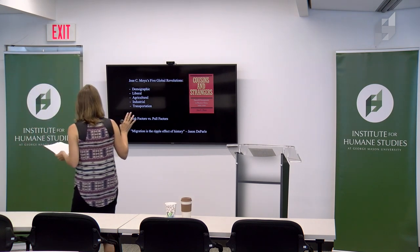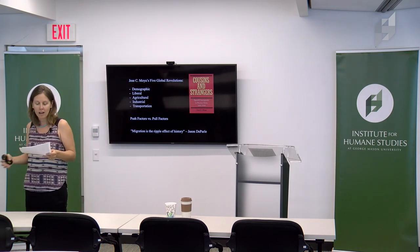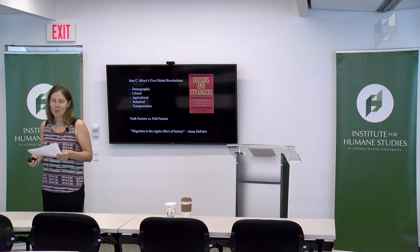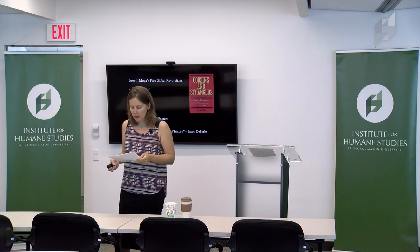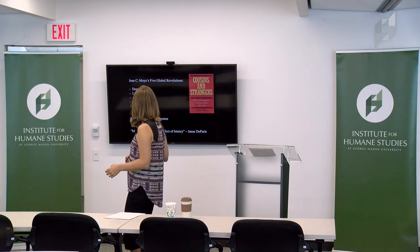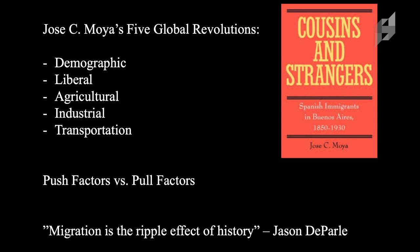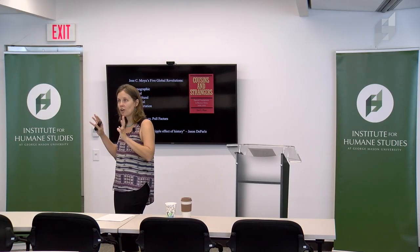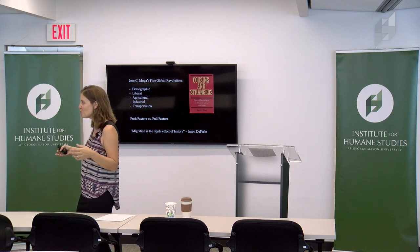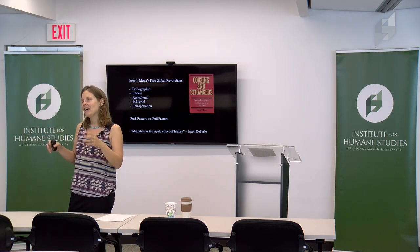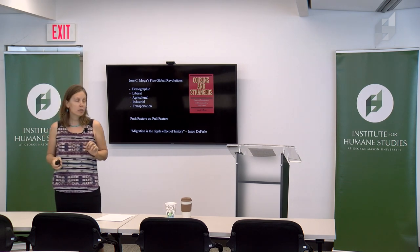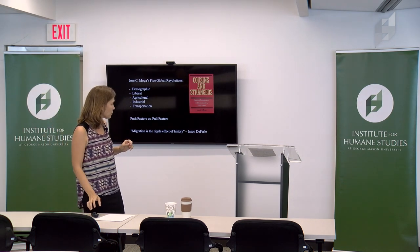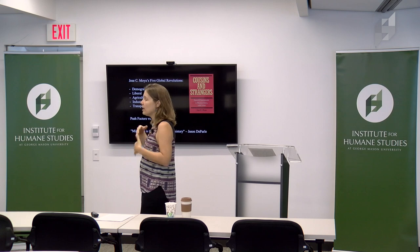To the word in the title — revolutions — I am going to briefly talk about Pancho Villa and Fidel Castro and the Sandinistas, but just really briefly. Because I want to talk about revolutions more broadly. I found very helpful a book called Cousins and Strangers: Spanish Immigrants in Buenos Aires, 1850–1930 by Jose Moya — it's actually the first book I read as a PhD student. He spent about ten years doing the research, did his work equally in Argentina and in Spain. He talks about the five global revolutions that led to mass European migration between about 1850 to 1930. He talks about the demographic revolution — the demographic transition — which involves birth rate and infant mortality.